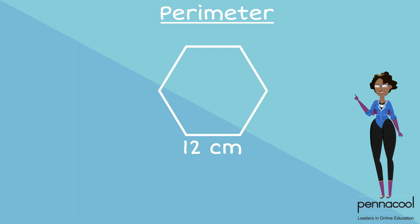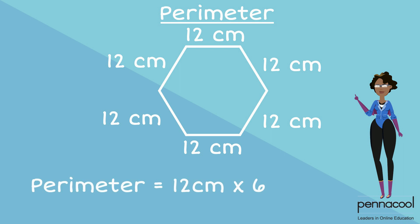This means we have 12 centimeters six times. This gives us a total of 12 centimeters multiplied by six, which is equal to 72 centimeters.